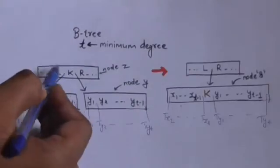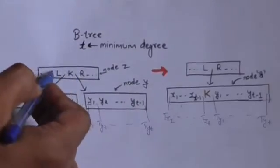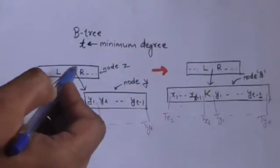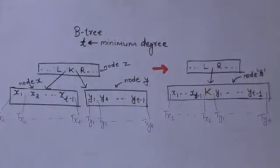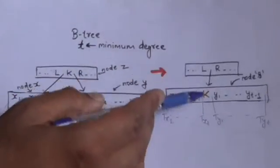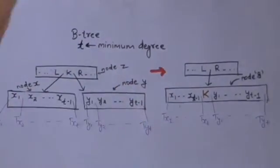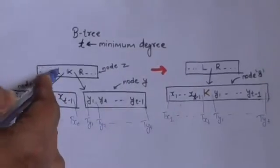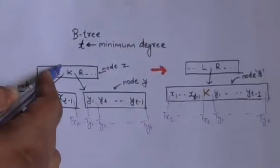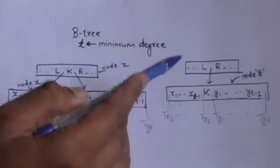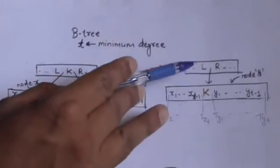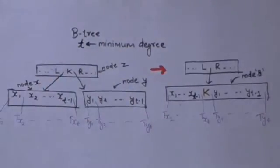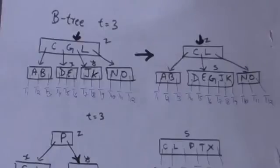Notice that before merging, key k was in node z between keys l and r. After merging, node s — which is formed by merging nodes x and y — is the child of node z between the keys l and r.